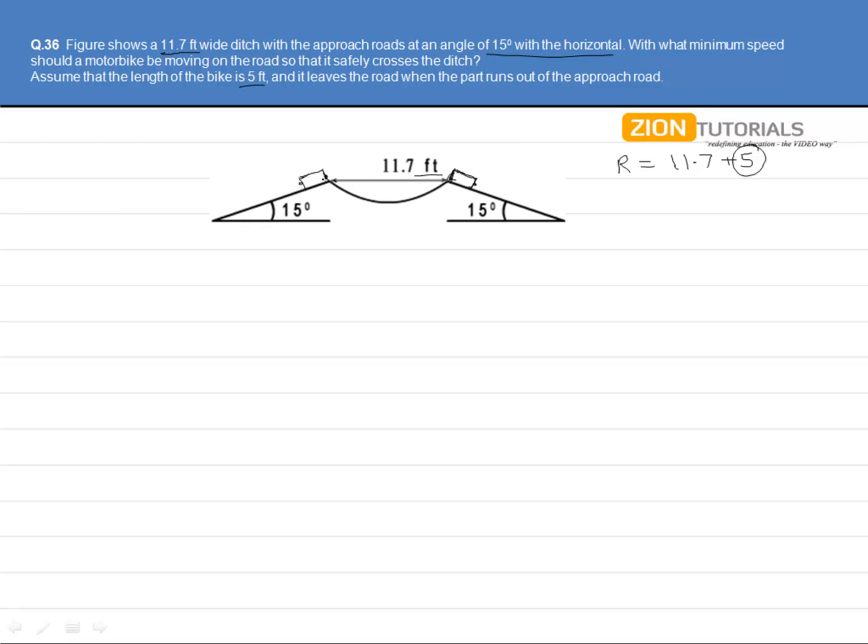So each point on the bike covers a distance of 11.7 plus 5, that is, this becomes a horizontal distance that it covers.